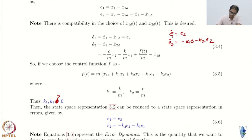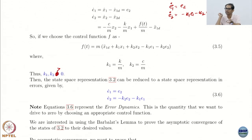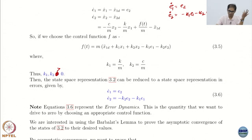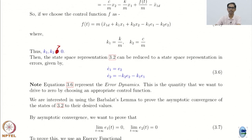So this is the control force F, and I end up with this error dynamics. Now I want to prove stability. You might say this is a linear time-invariant system — just compute the eigenvalues and you are done. But suppose this was a nonlinear system; you would need to come up with a Lyapunov function. And more often than not, we will encounter nonlinear systems, so let us do it anyway.